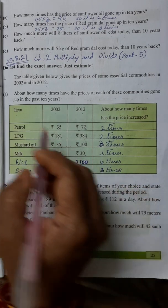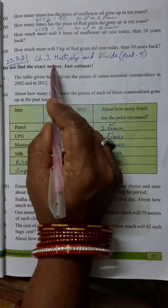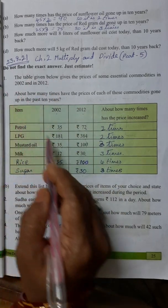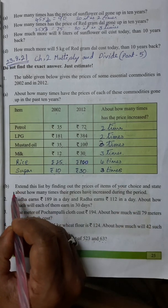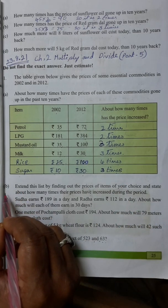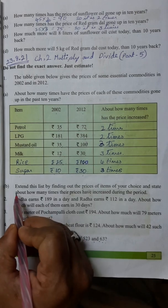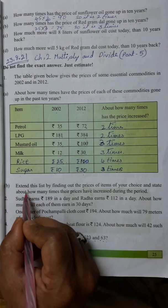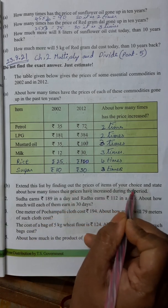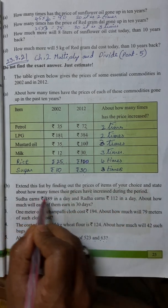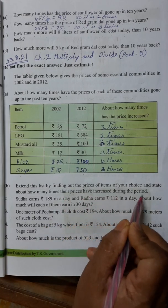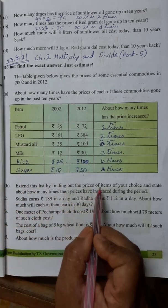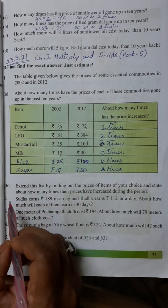Your duty is to write the heading — Multiply and Divide, Part 5, and the date — then write the two question lines and draw the table. Also write Question B: extend the list by finding out the prices of items of your choice and state about how many times their prices have increased during the period. I have already done this using rice and sugar.